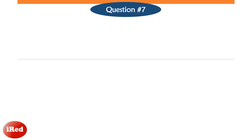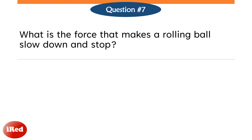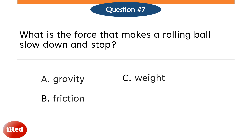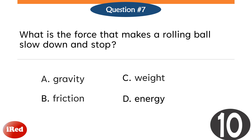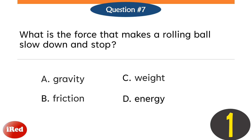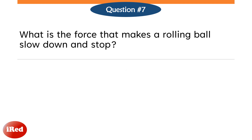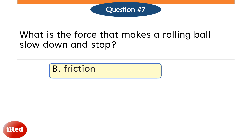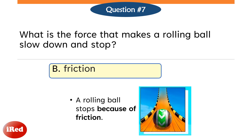Question number seven. What is the force that makes a rolling ball slow down and stop? Letter A, gravity. Letter B, friction. Letter C, weight. Or Letter D, energy. The correct answer is Letter B, friction. When a ball rolls on the ground, the force of friction acts between the surface of the ball and the surface of the ground. Friction is the force that prevents one solid object from sliding or rolling over another.